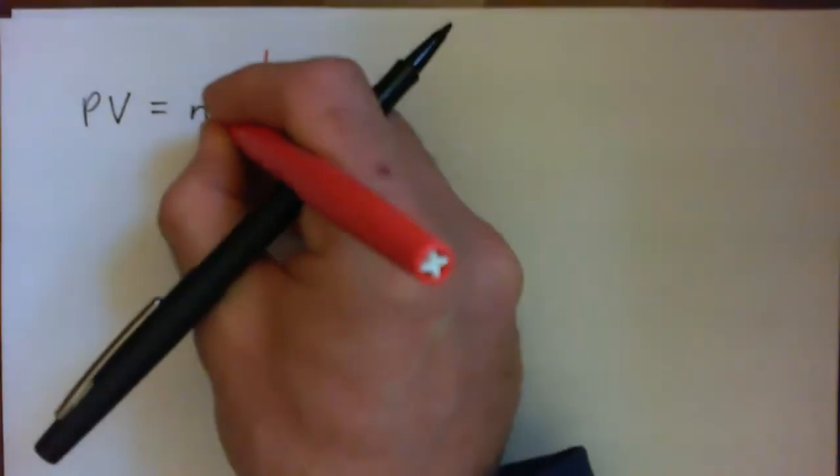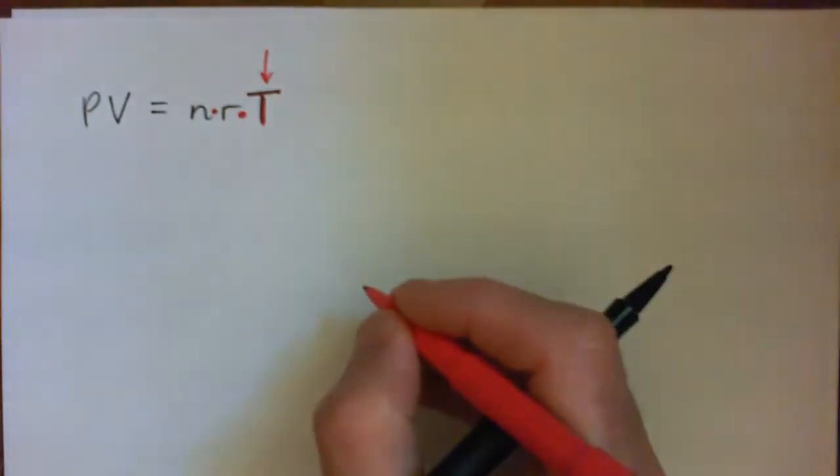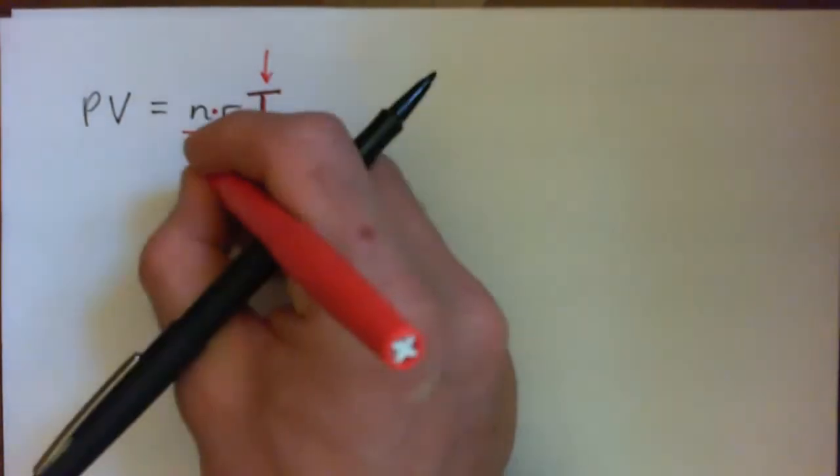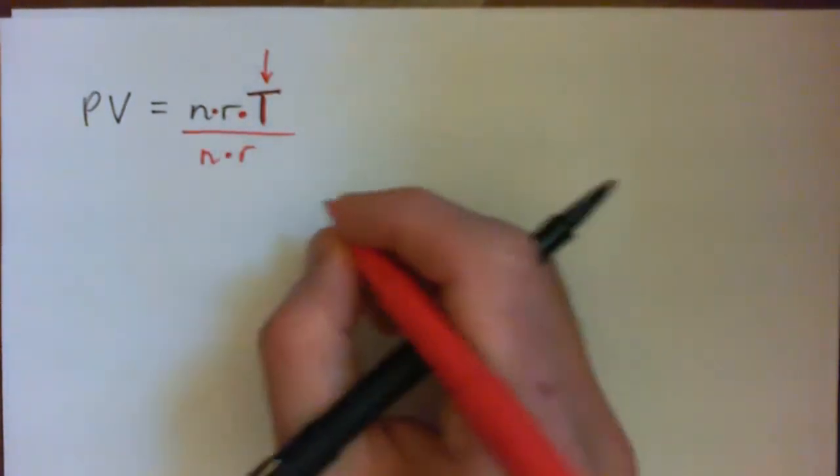T has been multiplied by n and multiplied by r. So the opposite of multiplying is dividing. So you've got to divide by n and divide by r.